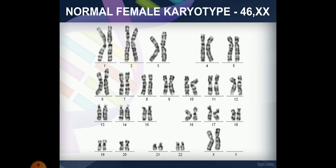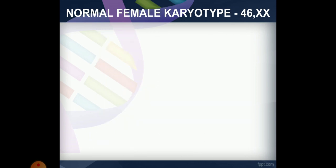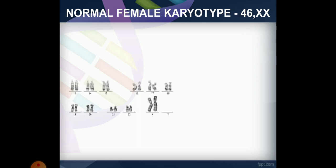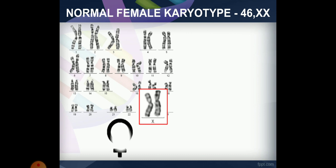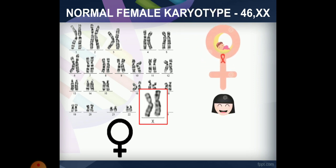There is a female karyotype. The female karyotype is based on the sex chromosome. Females have an X chromosome — the female gender represents two X chromosomes.